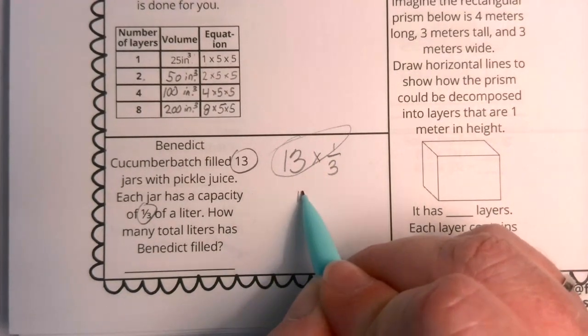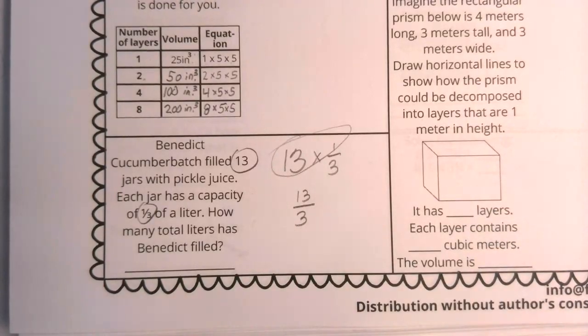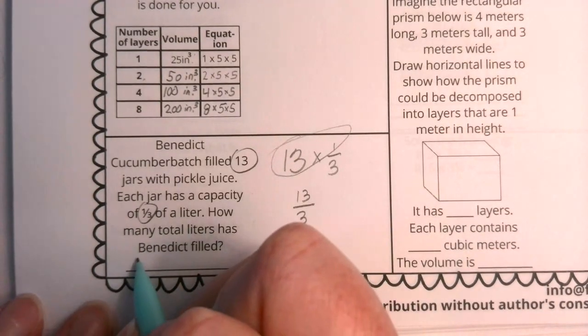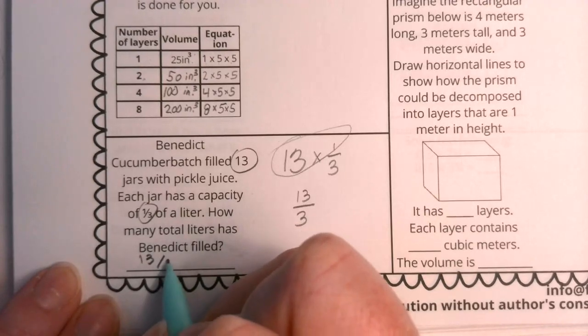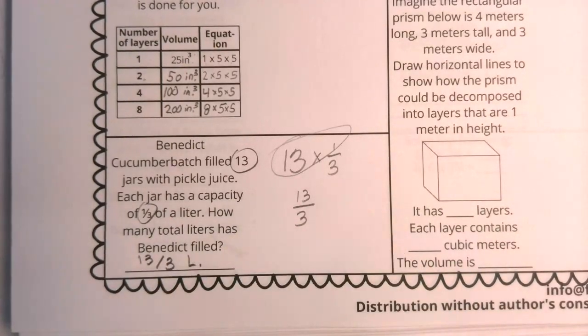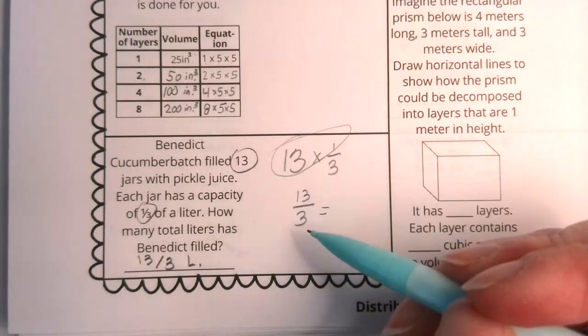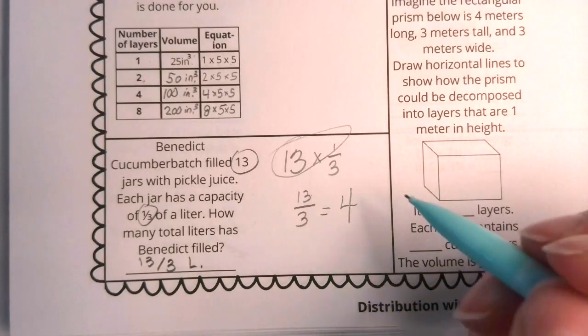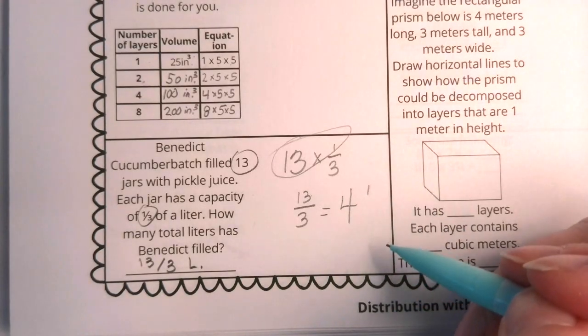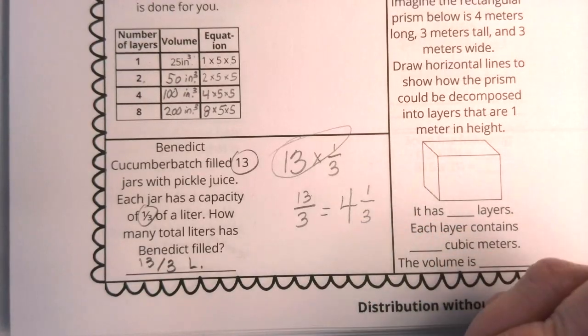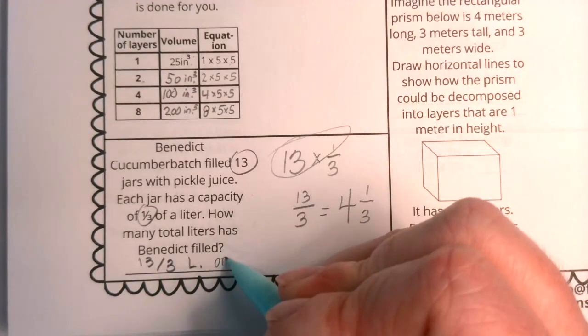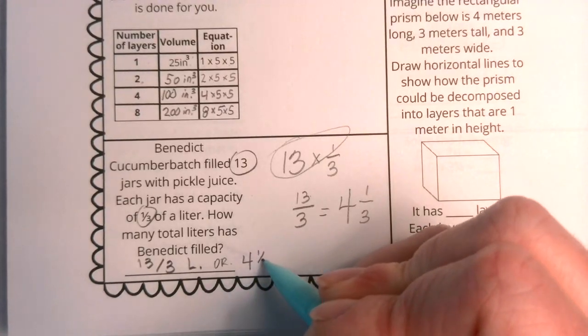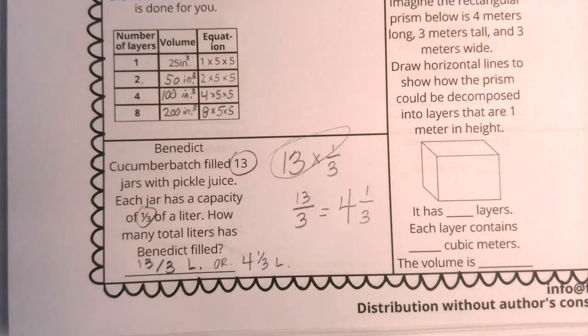13 times one is 13. And we have 13 thirds. So we can leave that as our answer. We can write that we have 13 thirds of a liter. Now if you prefer, you can say how many times does three go into 13. Well, it goes in four times. How many are left over? Your remainder becomes your new numerator. So our new numerator is one and our denominator stays the same. You could also write this as four and one third of a liter. That's another option for you. But truly, either of those are perfectly correct. And that finishes out our Monday column.